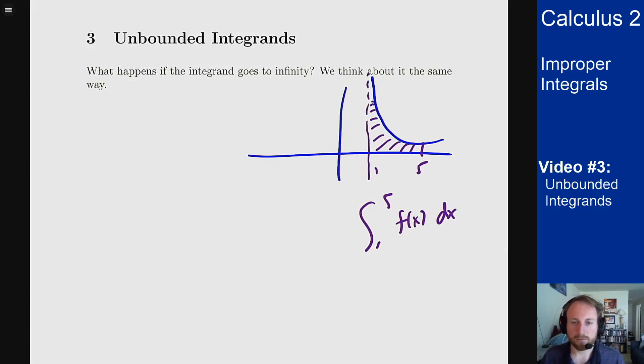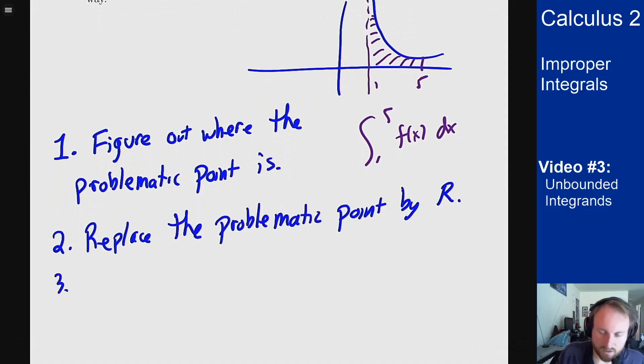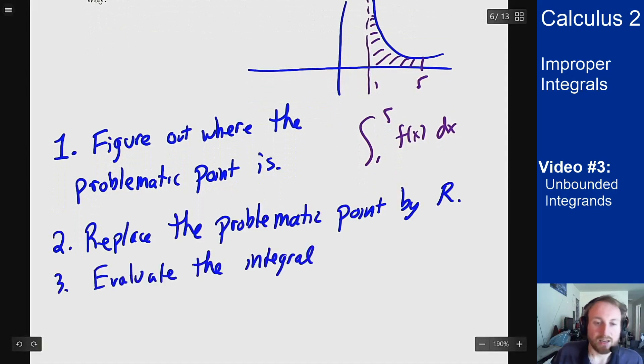So step one is always figure out where the problematic point is. Once you know which endpoint is problematic or how to handle it, then you replace that by an r, do the integral, and then limit r to the endpoint. So put an r in there instead, evaluate the integral, and then limit r to the problematic point from the correct side to get the answer.